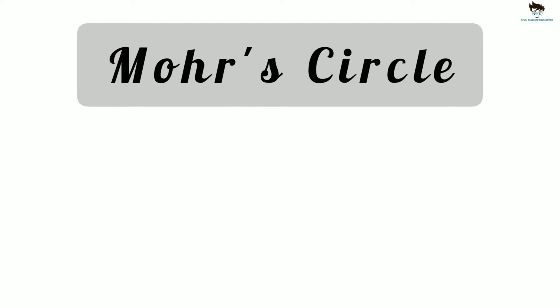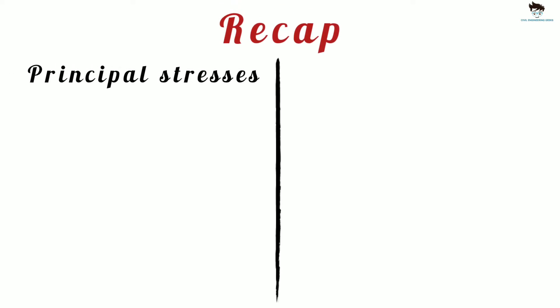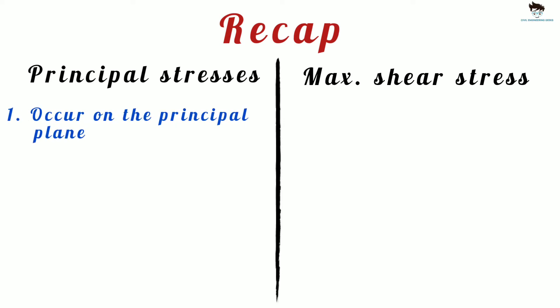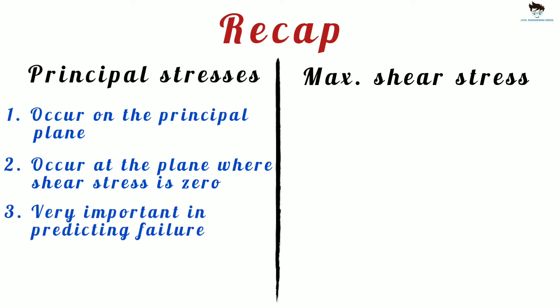Let's now learn how to plot Mohr's circle and how to find the principal stresses and maximum shear stress using Mohr's circle. Principal stresses are the normal or direct stresses that occur on the major principal plane and the minor principal plane. Principal stresses occur at the plane where shear stresses are zero. They are very important in predicting the failure of the structure, as it is the maximum stress at the critical plane.